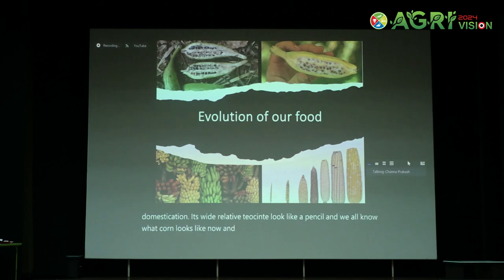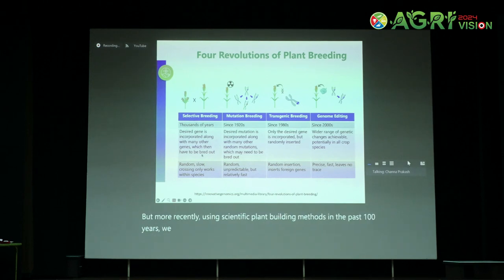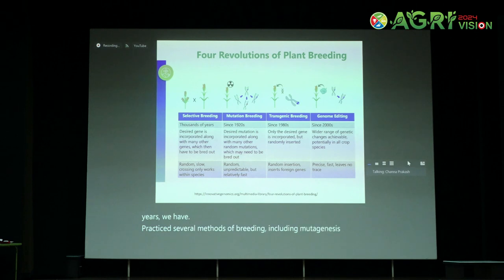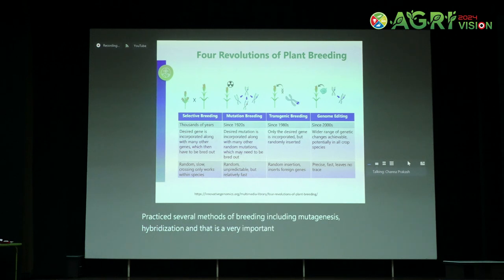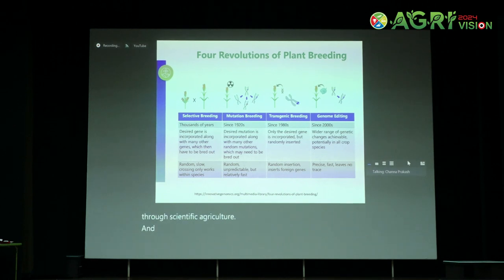This process of change has been happening all the time since the dawn of agriculture. But more recently, using scientific plant breeding methods in the past 100 years, we have practiced several methods of breeding including mutagenesis and hybridization. That is a very important reason why we have been able to feed humanity even though our world population has grown so much. Scientific agriculture and plant breeding through many of these techniques has been very important.